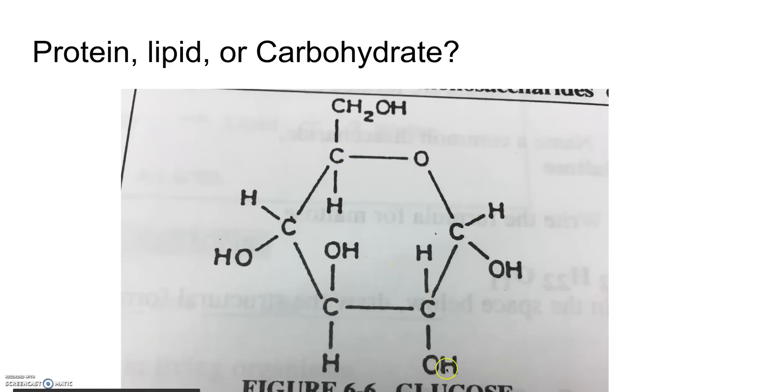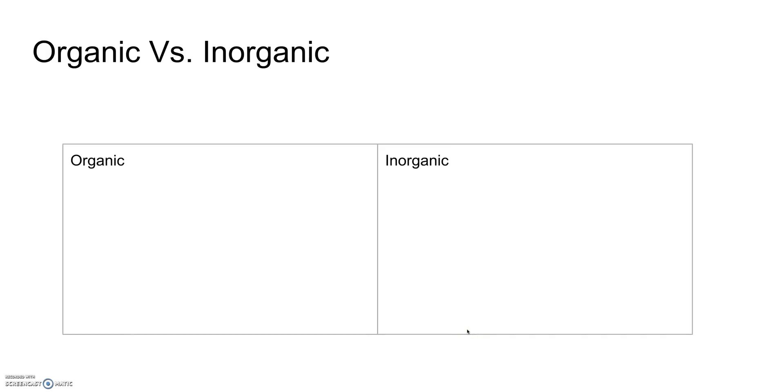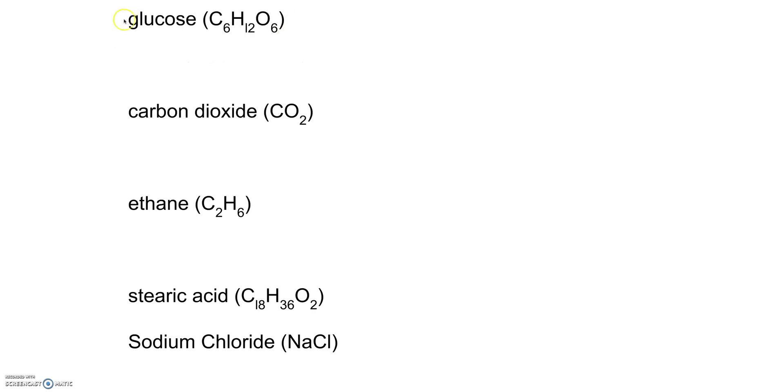So this ring is what you want to make sure you understand when looking to see if it's a carbohydrate sugar. Now know the difference between inorganic and organic substances. Organic means that they have a carbon and hydrogen backbone. Inorganic, they do not have carbon and hydrogen together, and organic substances are usually found in living things, but living things also contain both organic and inorganic.